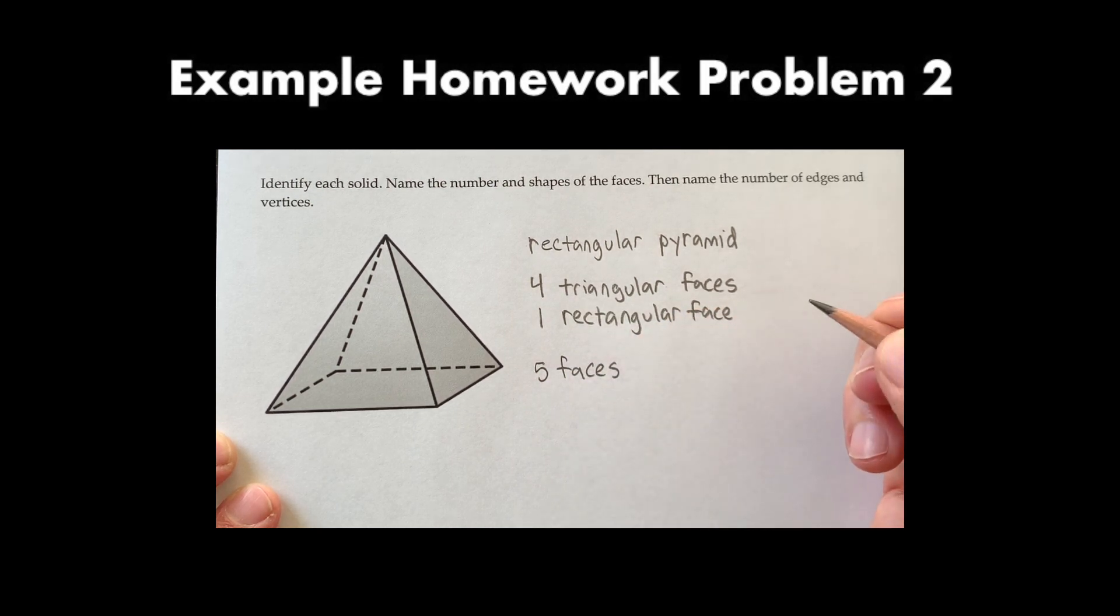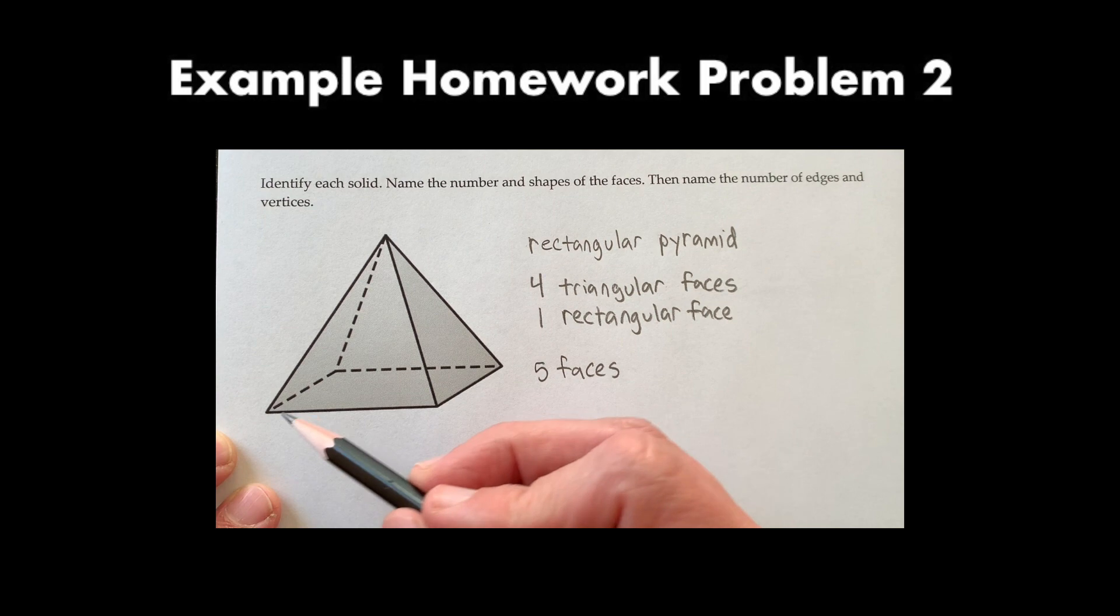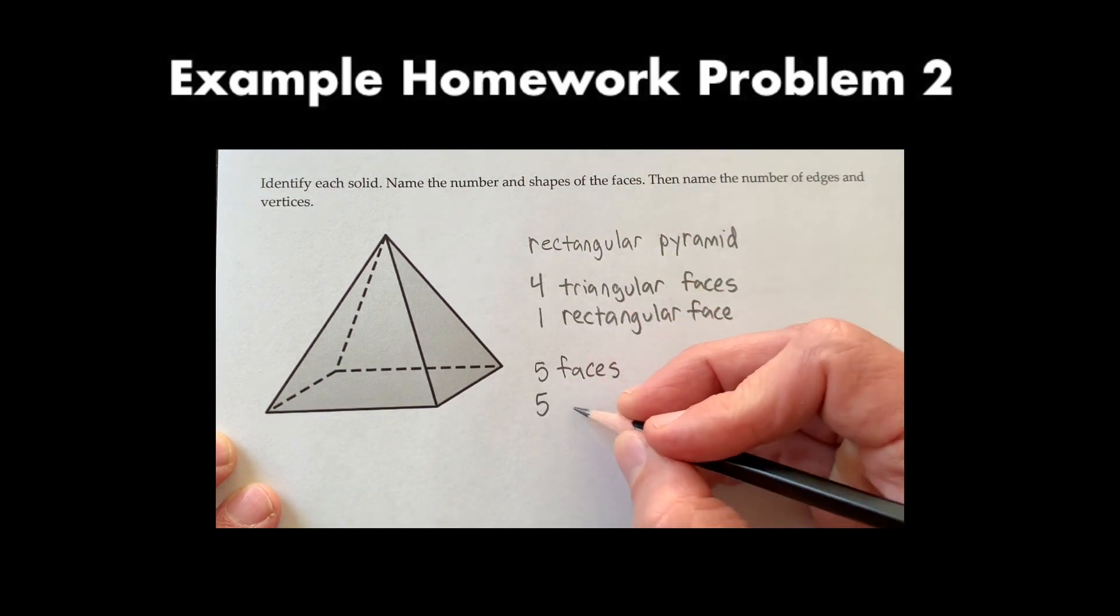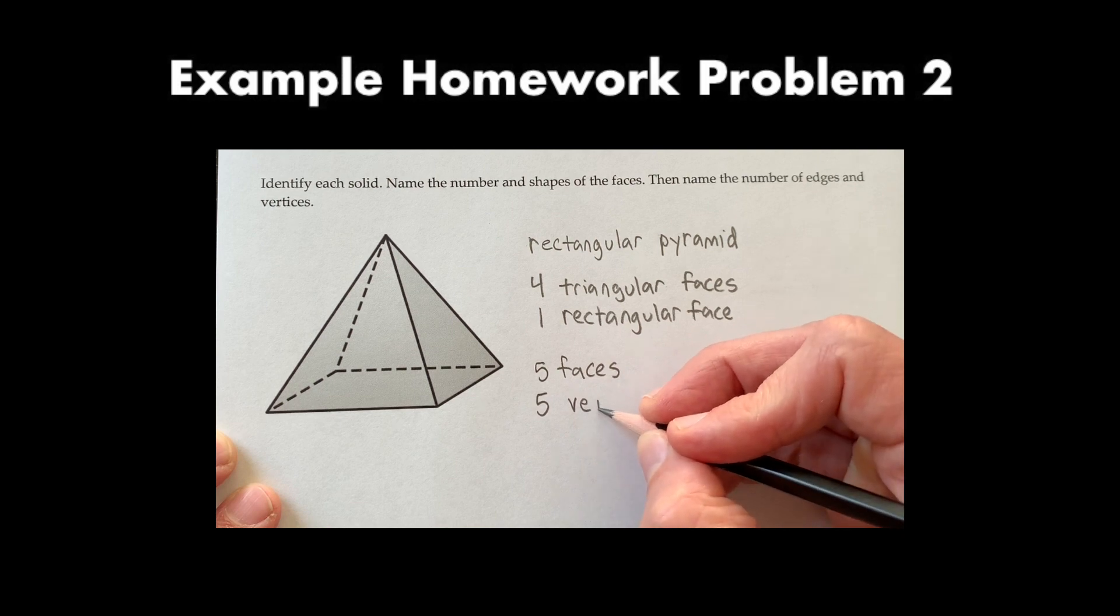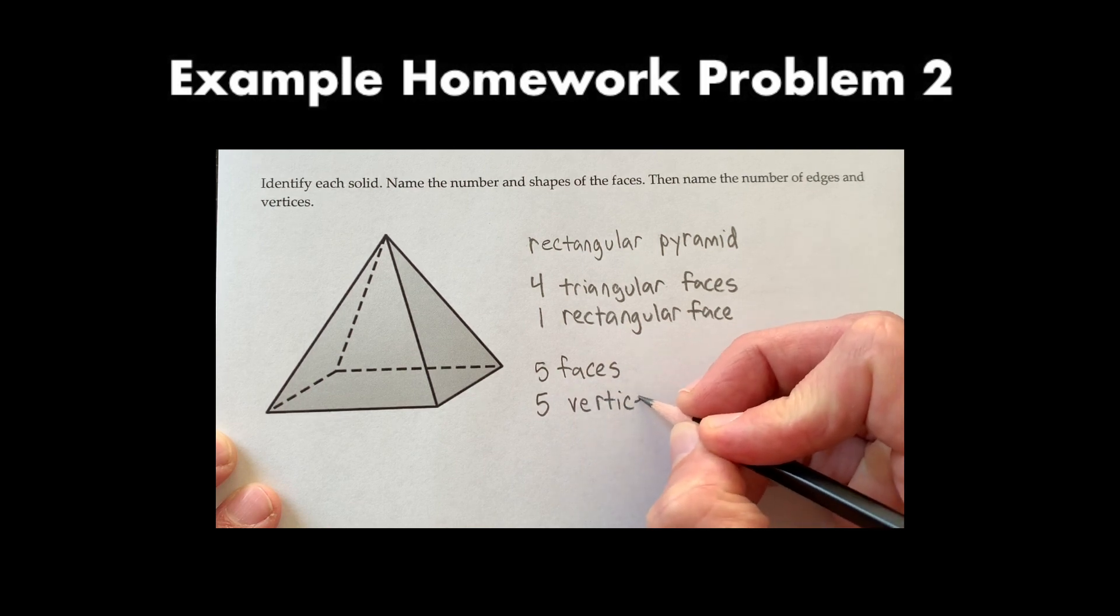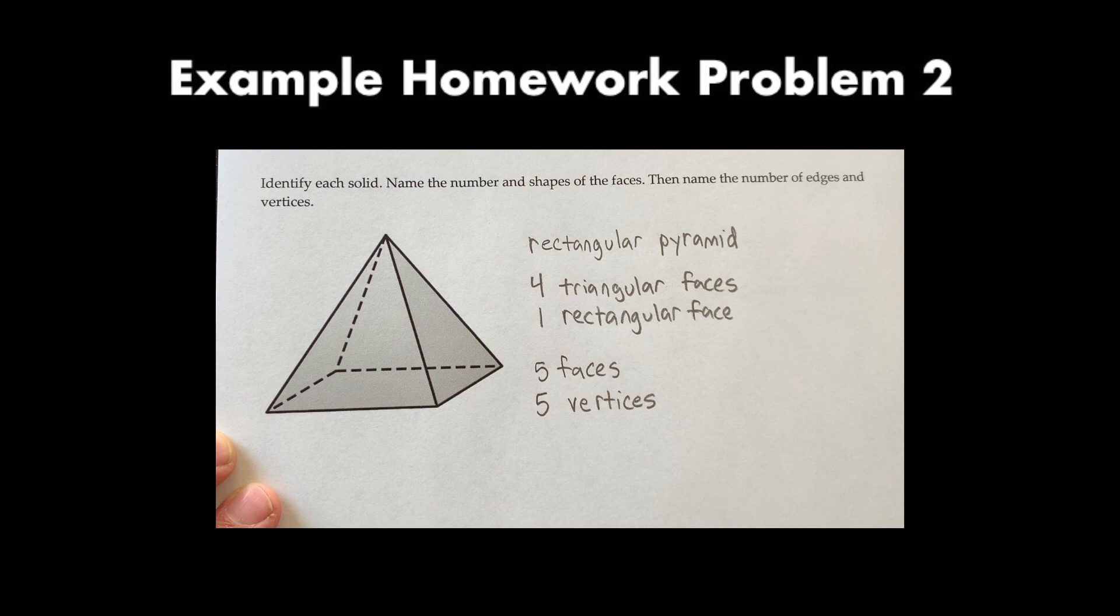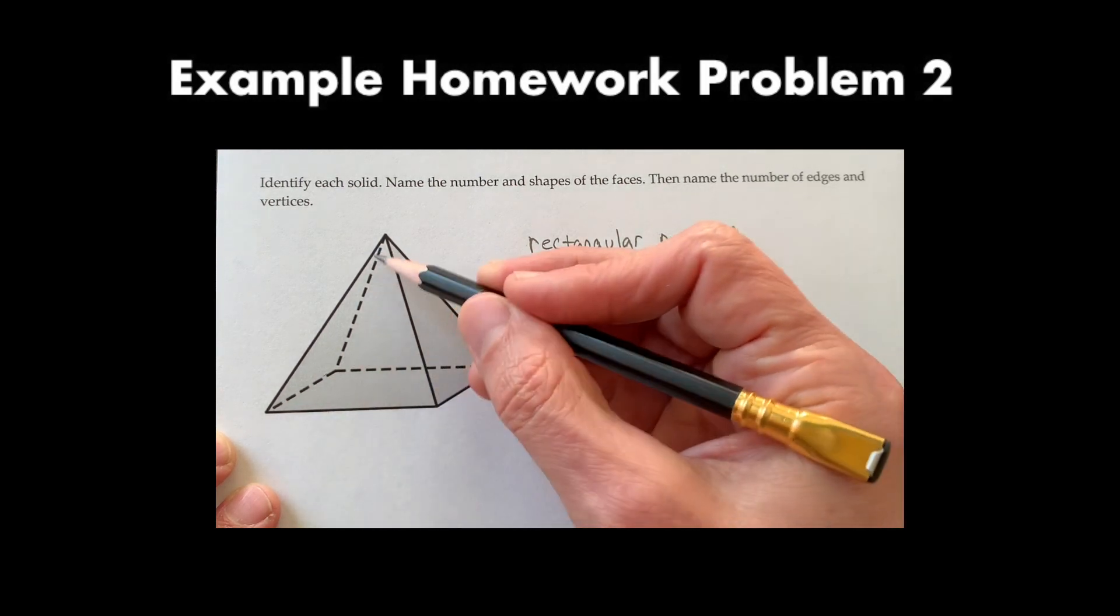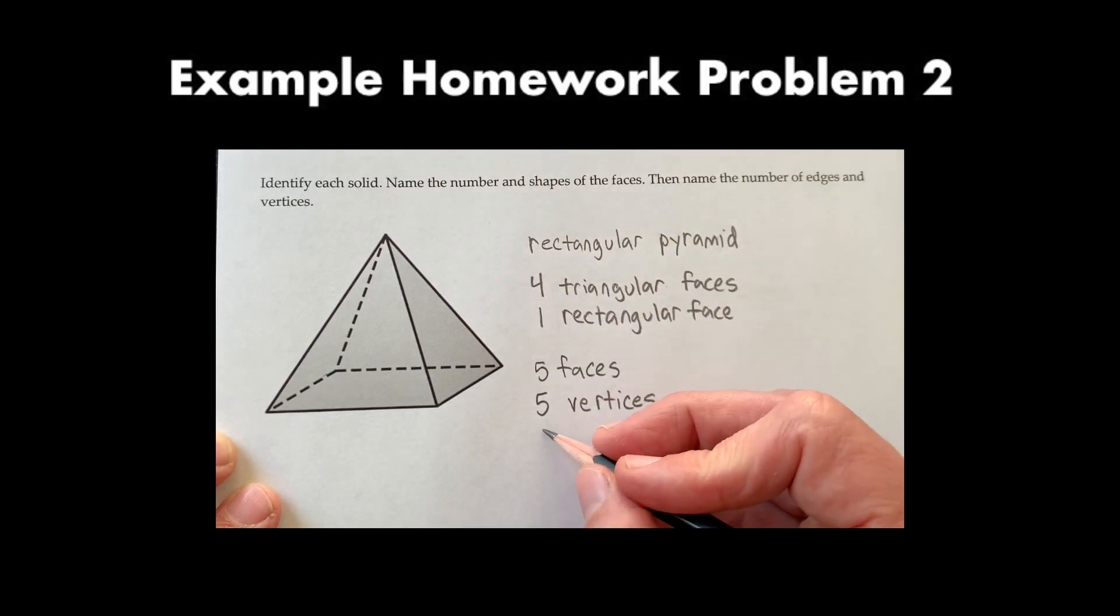And then I need to count the number of edges and vertices. Count the corners first. That's nice and easy. Five vertices. And then finally, I'm going to need to count the edges. I can see that there are four edges down at the bottom and then four edges leading up to the point. So that's eight edges altogether.